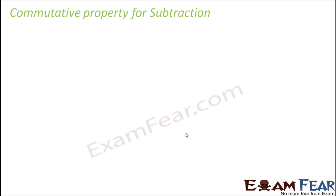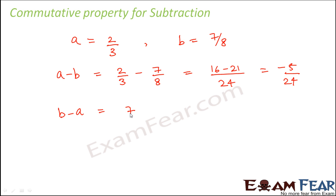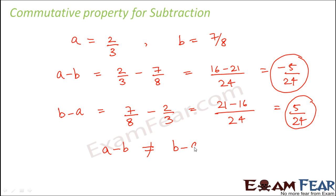Let's do the same for subtraction. Again a equals 2/3 and b equals 7/8. Calculating a minus b: 2/3 minus 7/8 gives 16 minus 21 over 24, which is minus 5/24. Now calculating b minus a: 7/8 minus 2/3 gives 21 minus 16 over 24, which is plus 5/24. Since a minus b is minus 5/24 and b minus a is plus 5/24, they are different values. Therefore a minus b is not equal to b minus a, so subtraction is not commutative for rational numbers.